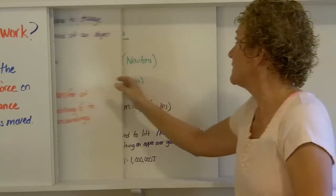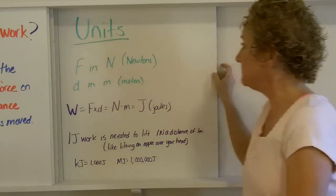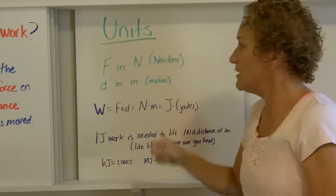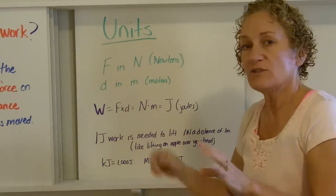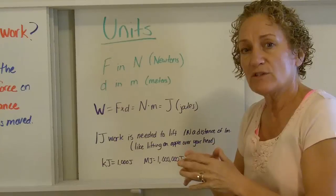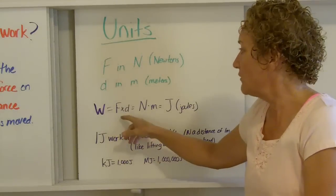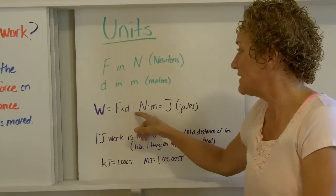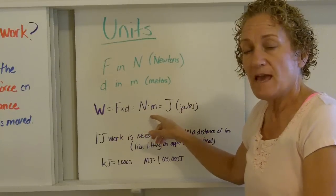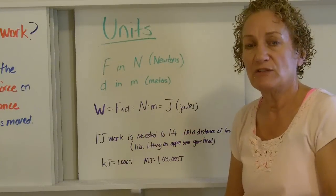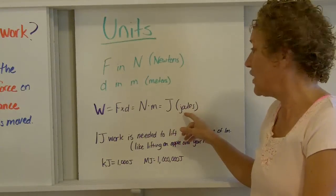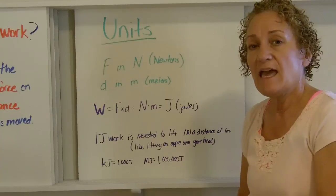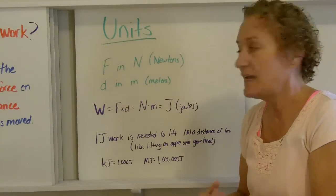So what units do we use for this? Glad you asked. The units that we use, force is in newtons and distance is in meters. If you have those two things, force in newtons and distance in meters, then work, which is force times distance, becomes a newton times a meter. And a newton times a meter has a special name. It's called a joule, uppercase J, and it's spelled J-O-U-L-E, and it's named after a famous scientist.